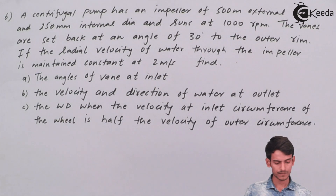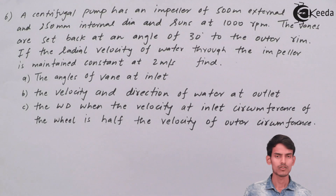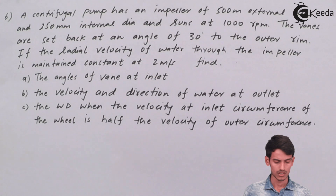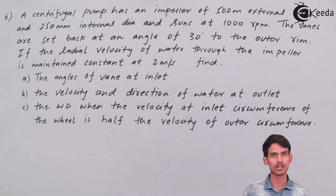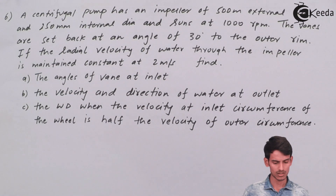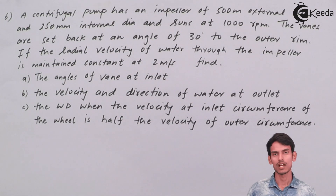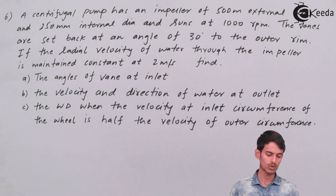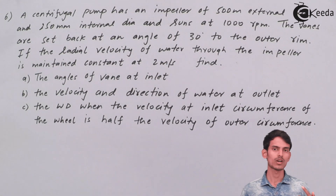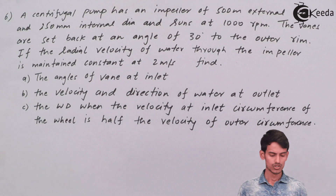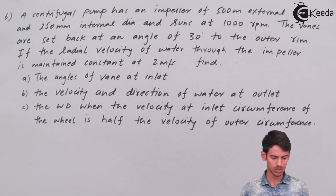Now let's see what we have to find. First, the angle of the vanes at the inlet. Next, the velocity and the direction of water at the outlet. Third, the work done when the velocity at the inlet circumference of the wheel is half the velocity of the outer circumference — that is, u1 is half of u2. So those are the three things we need to find.